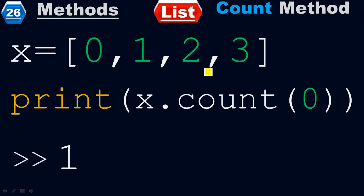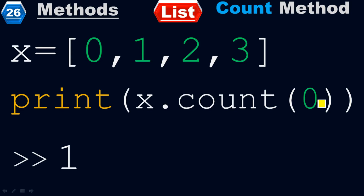It is not something to count all the elements — we have a total of 4 elements, but this is not for the total count. It is only for a specific element: how many times that element has been used in the list. You have to specifically put it inside the parentheses. For example, if you want to check how many times 3 appears, you put 3 inside the parentheses. That's what the count method does.